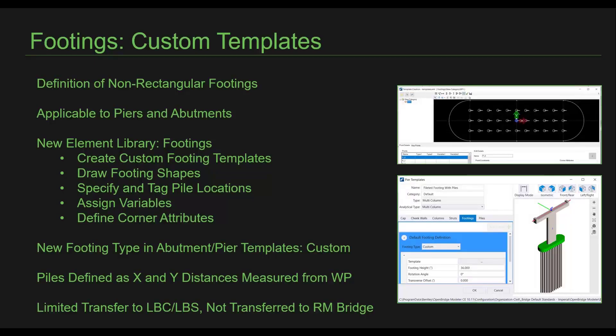A major enhancement in the latest release of OpenBridge Modeler is the capability to create custom footing templates through the new element library footings. This new feature allows the definition of non-rectangular 2D footing templates that are applicable to abutments and piers. In the new footings library, footing shapes can be drawn, pile locations can be specified and tagged, variables can be assigned to create parametric templates, and corner attributes can be defined to fillet or chamfer the corners of the footing.